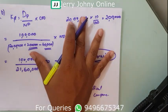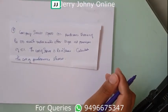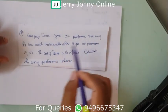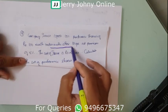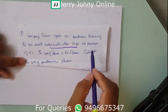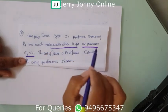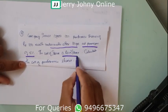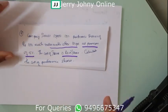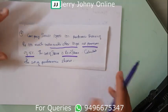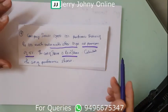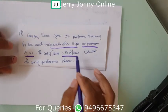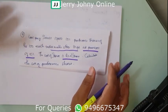Let us do one more problem. A company issues 10,000 10% preference shares of rupees 100 each, redeemable after 10 years at a premium of 5%. The cost of issue is 2% (flotation cost). Shares are issued at par. What is the cost of preference shares?